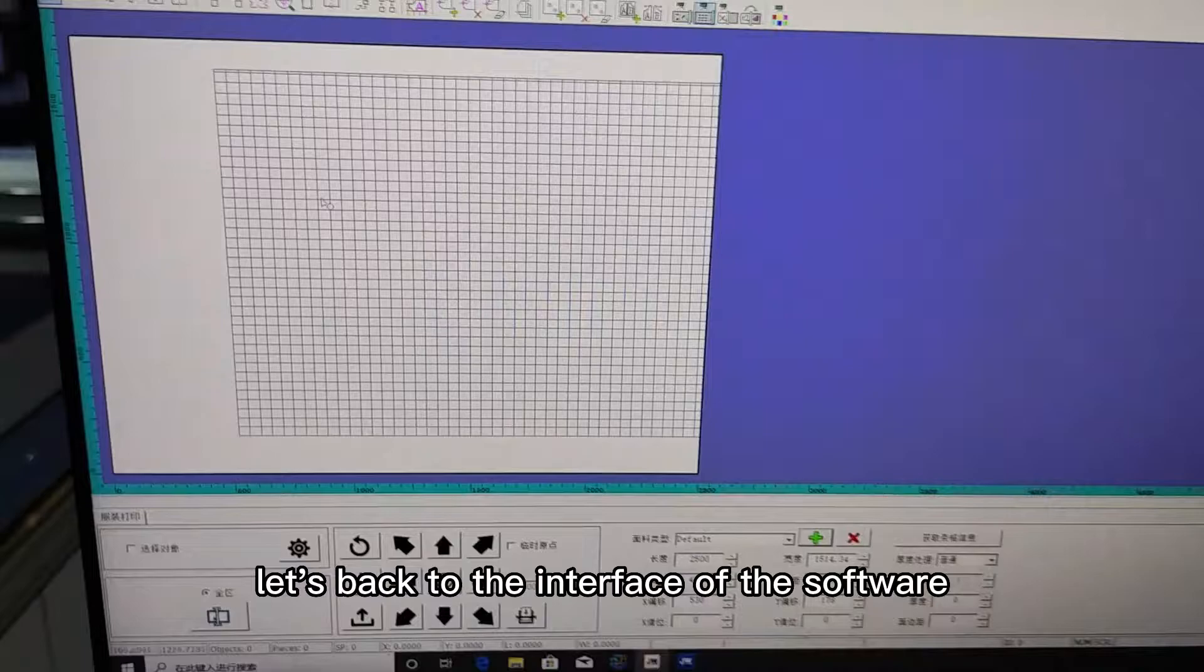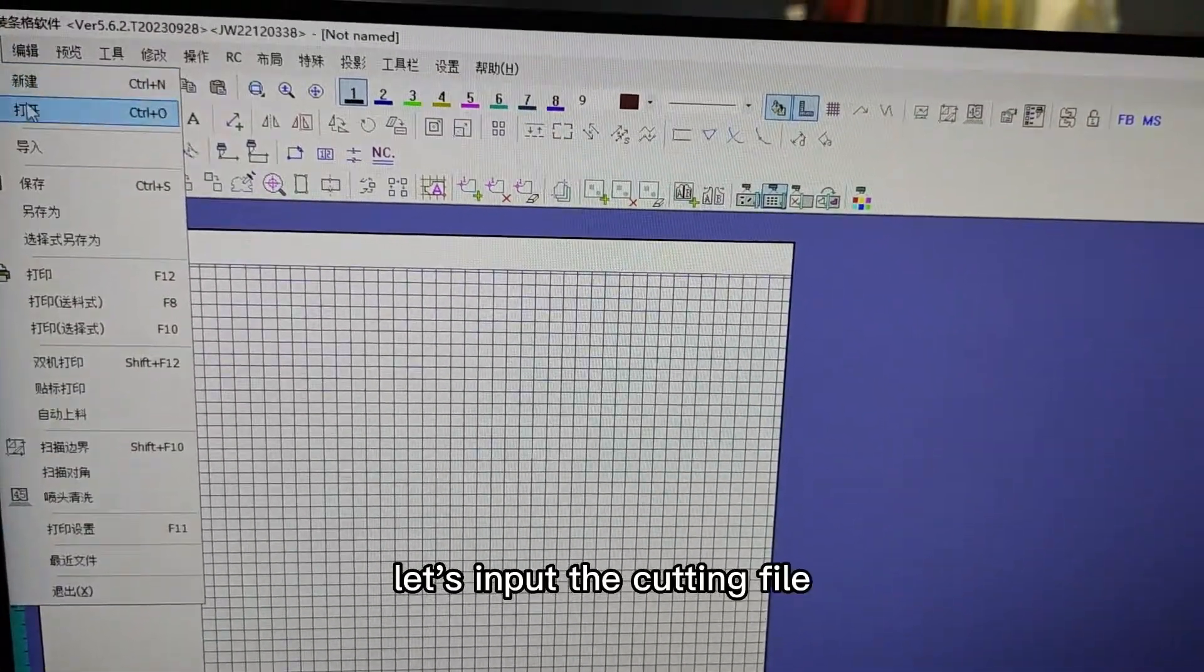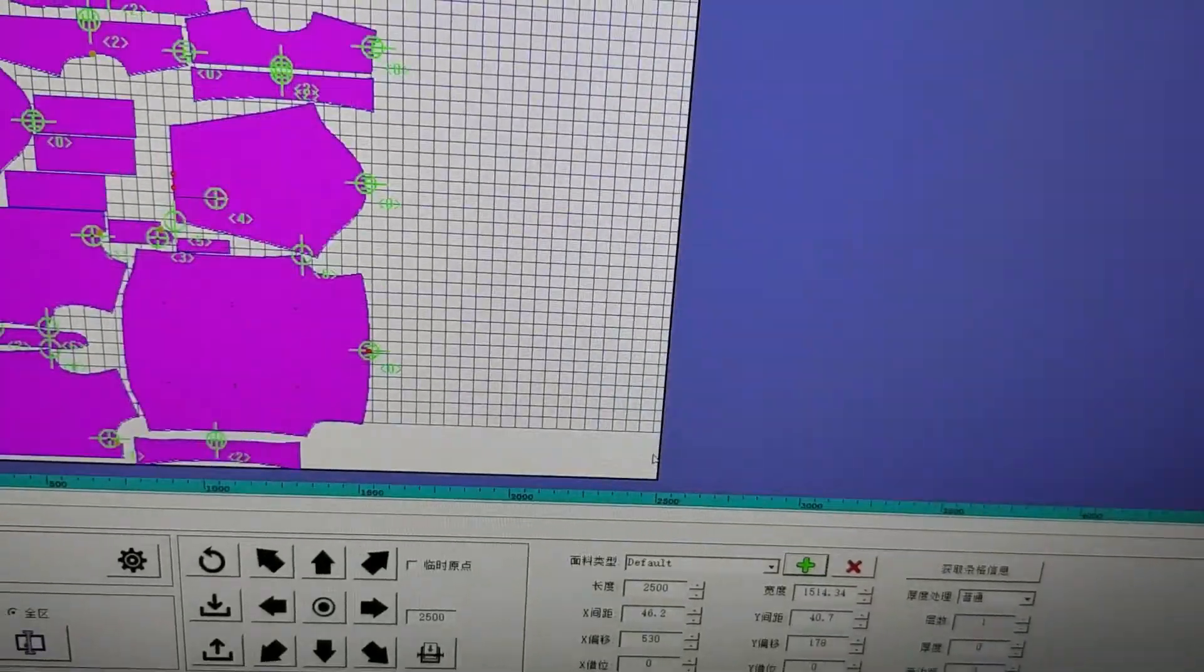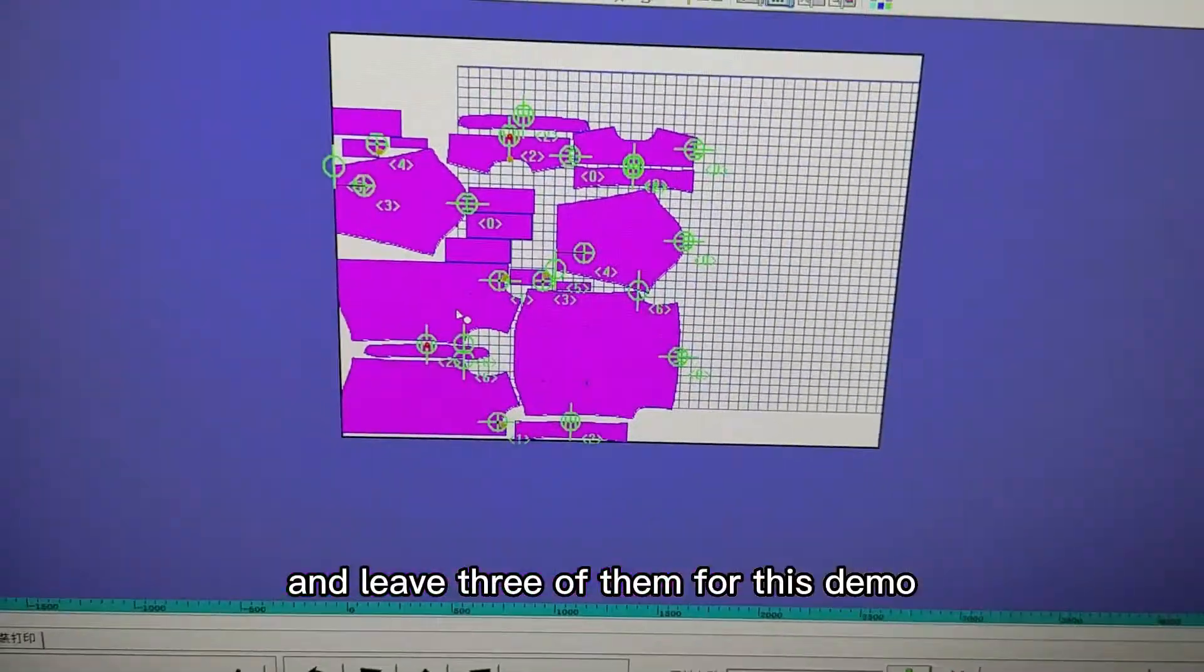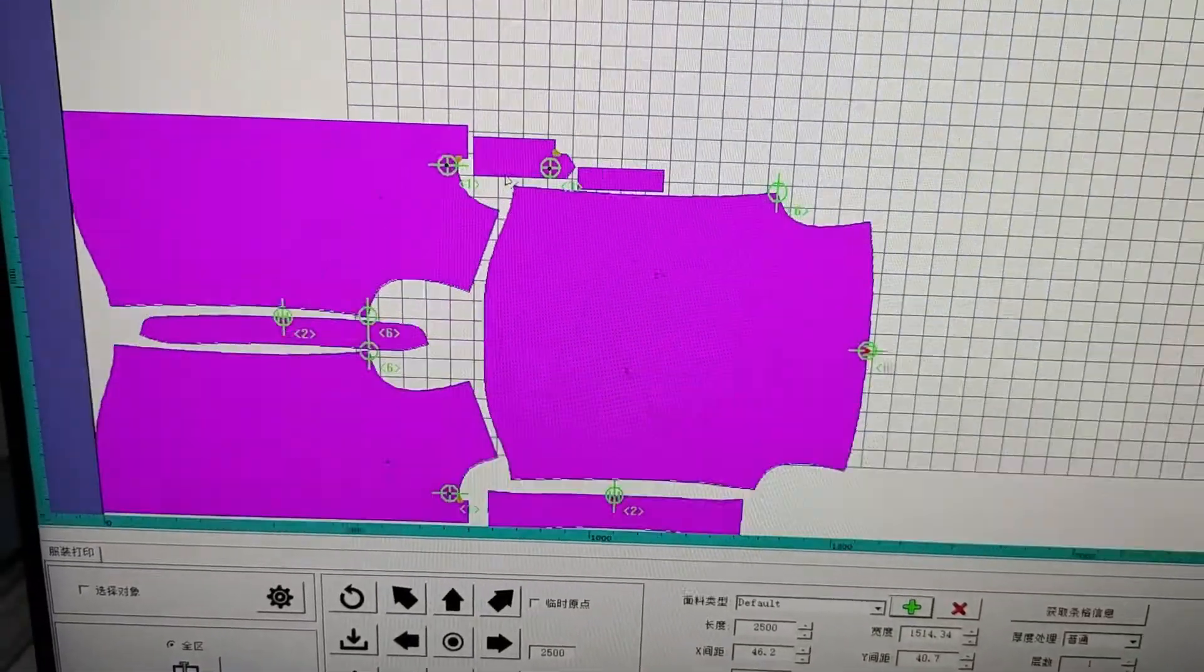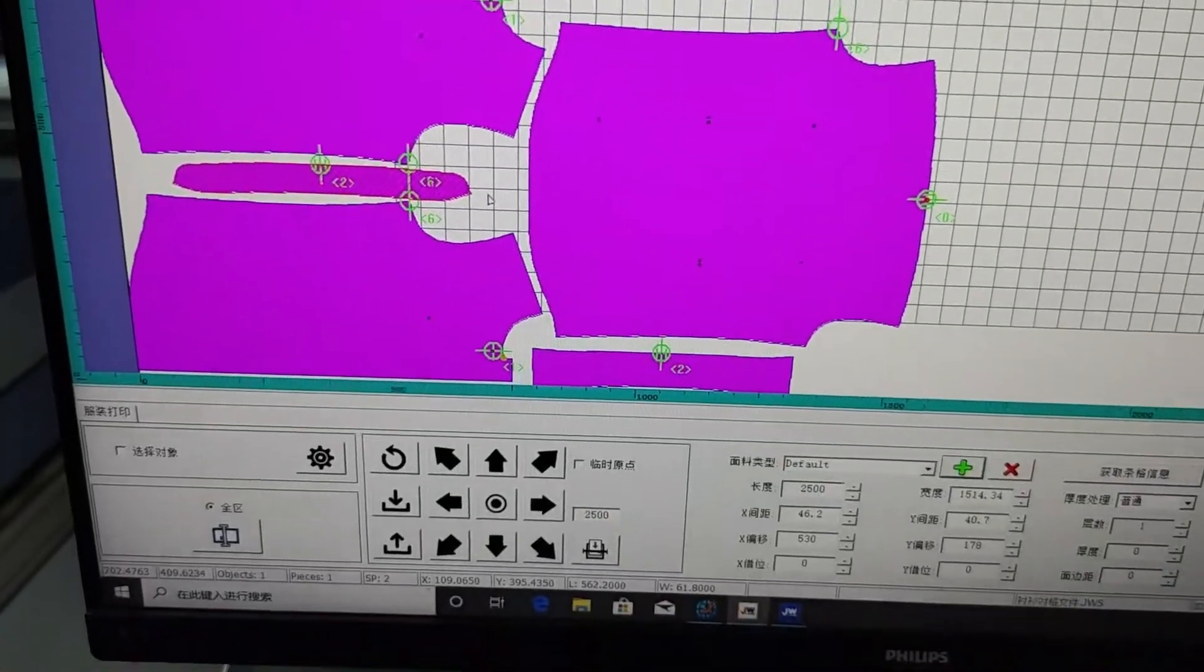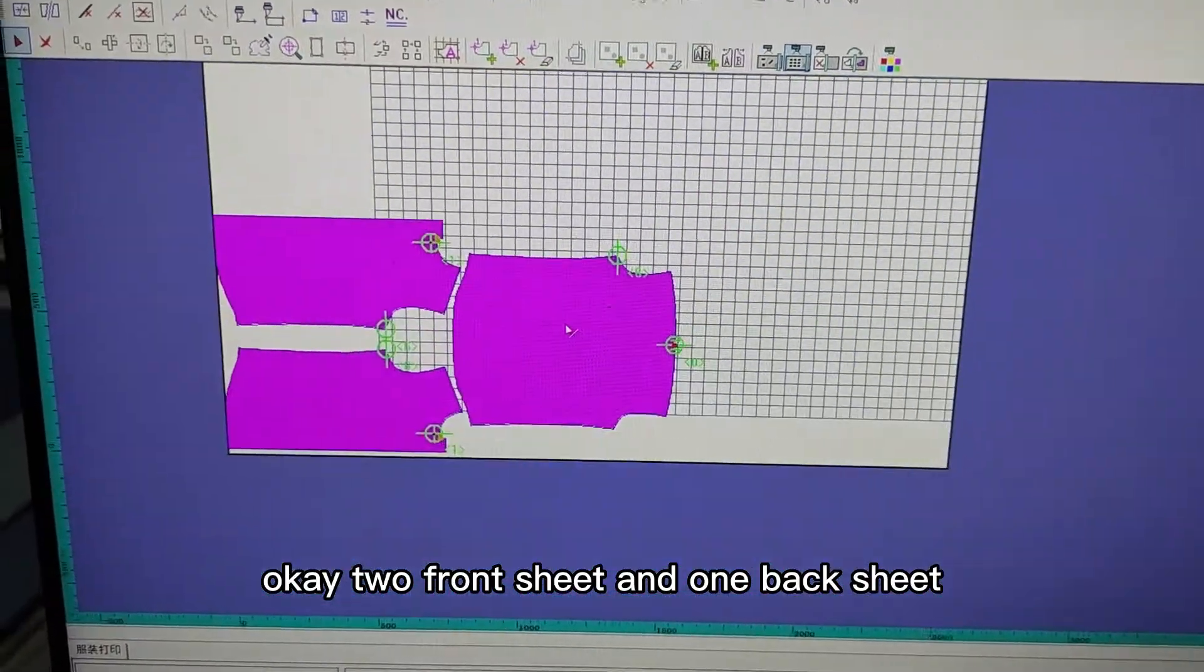Let's go back to the interface of the software. Let's input the cutting file and leave three of them for this demo. Okay, two front sheets and one back sheet.